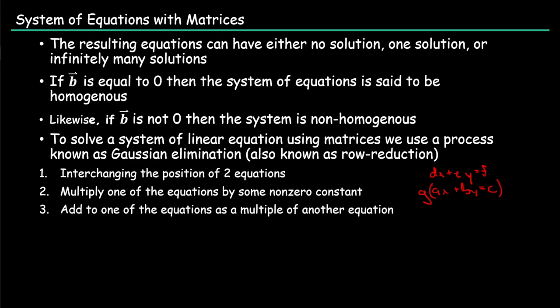Using this same equation, if we would multiply this by negative G and then add it to the equation at the top, we would, for the most part, find a variable that will cancel out. In this case, we can hypothetically say that the DX and the AGX will cancel out and you're just left with EY plus GBY equals F plus GC. From there, because you have it in terms of one variable, you can find your Y and then use that to solve for your X.